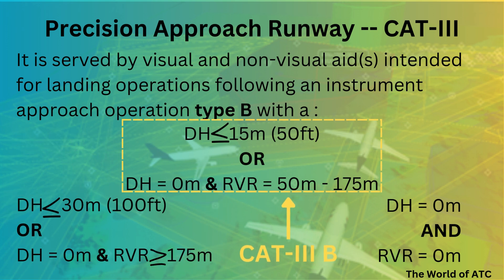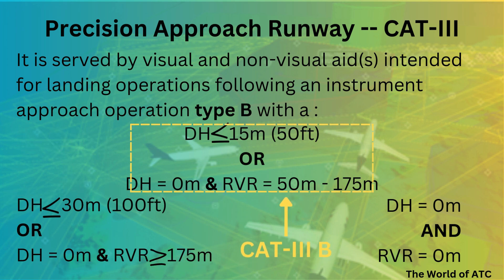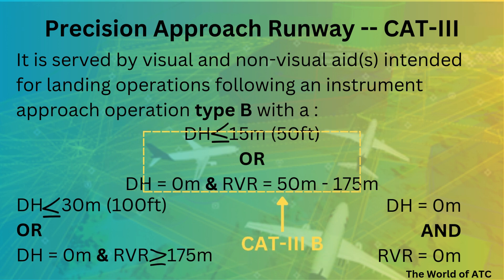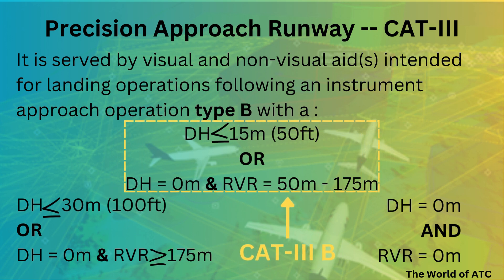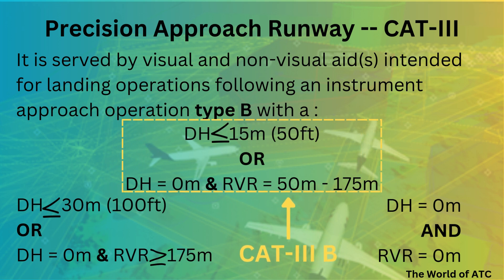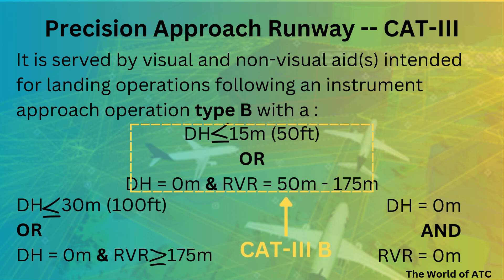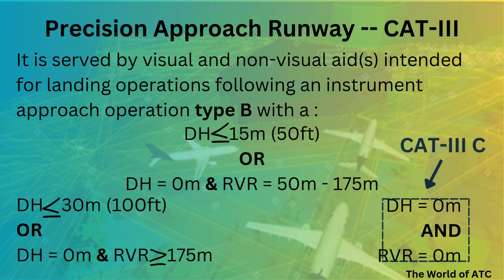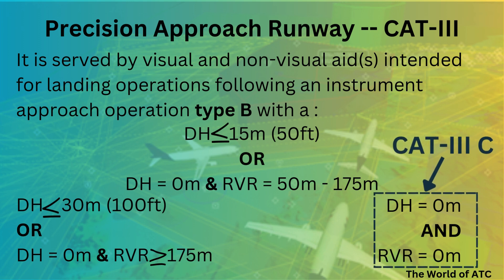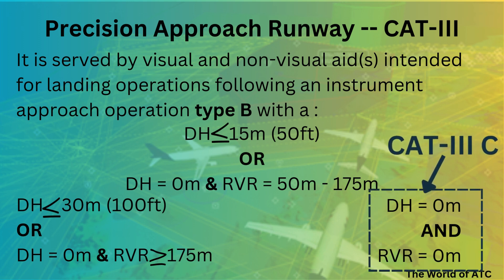For CAT-3 Bravo runways, the decision height could be 50 feet or less than 50 feet, and in some cases the decision height would be zero if the RVR is between 50 to 175 meters. However, for CAT-3 Charlie runways there is no requirement for any decision height or any RVR.